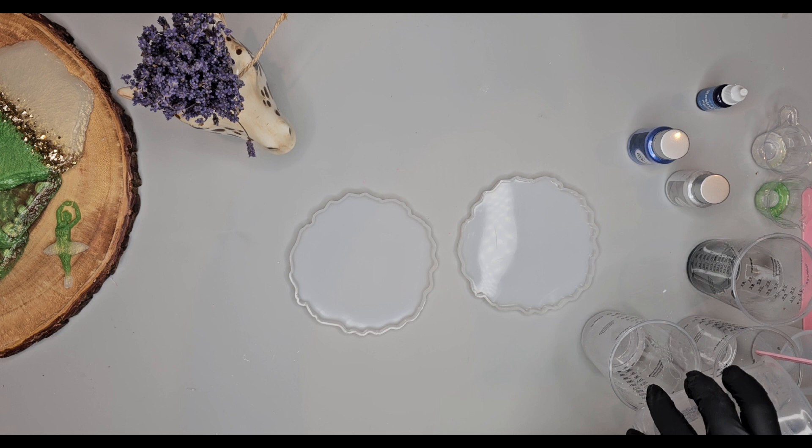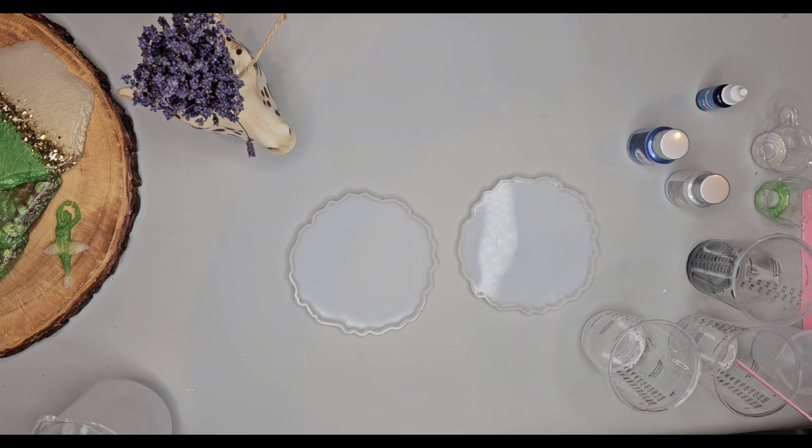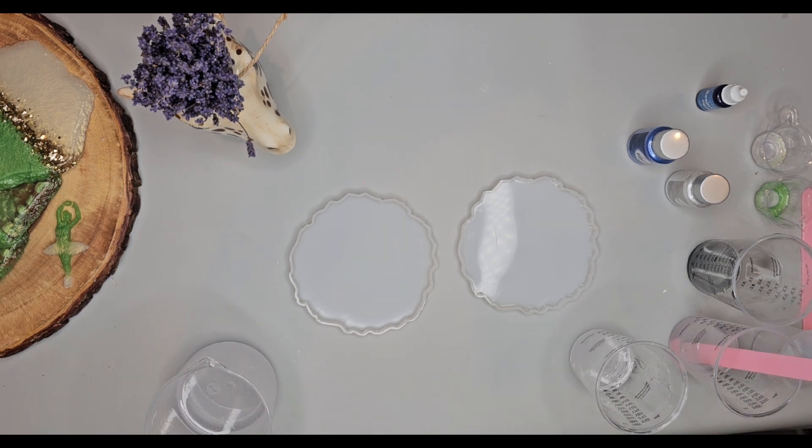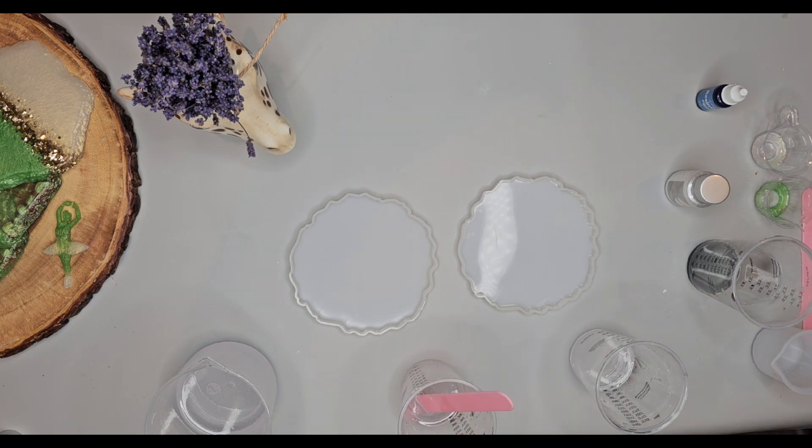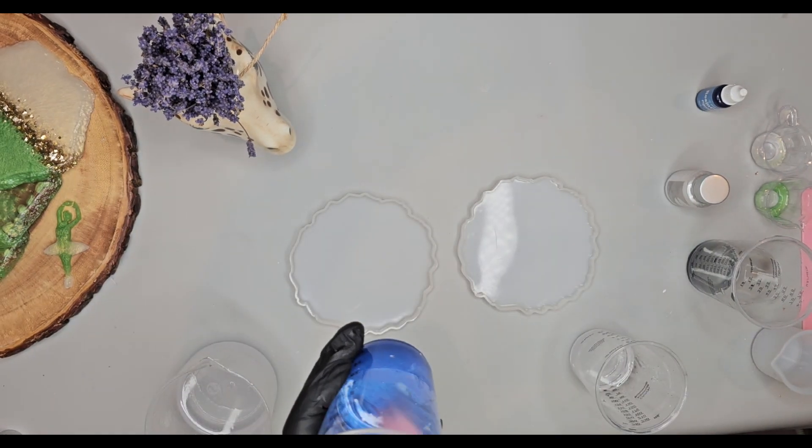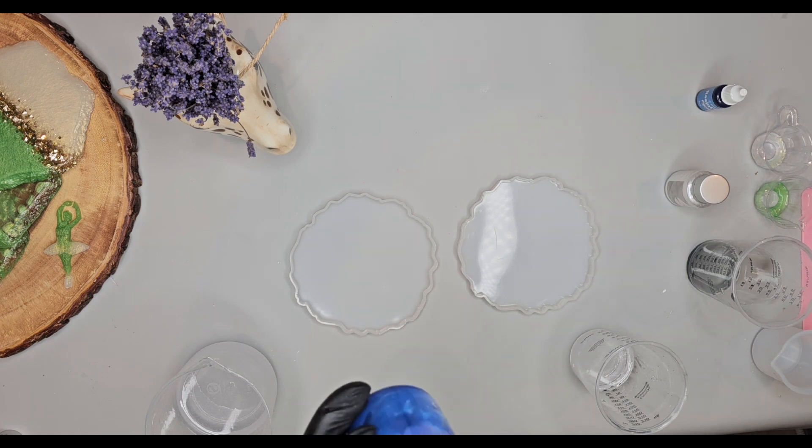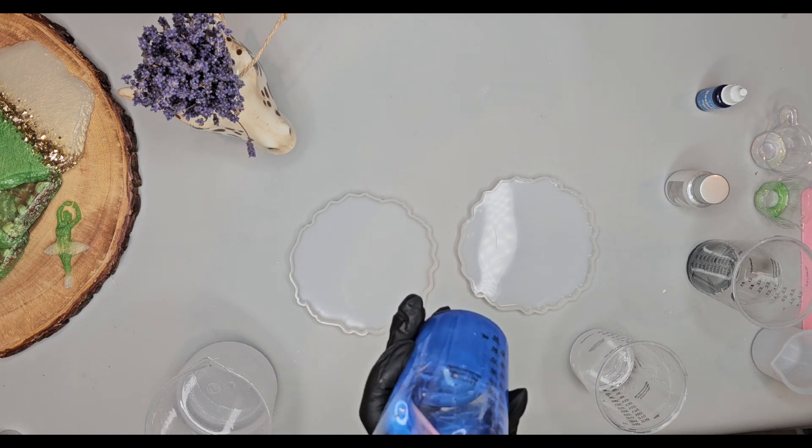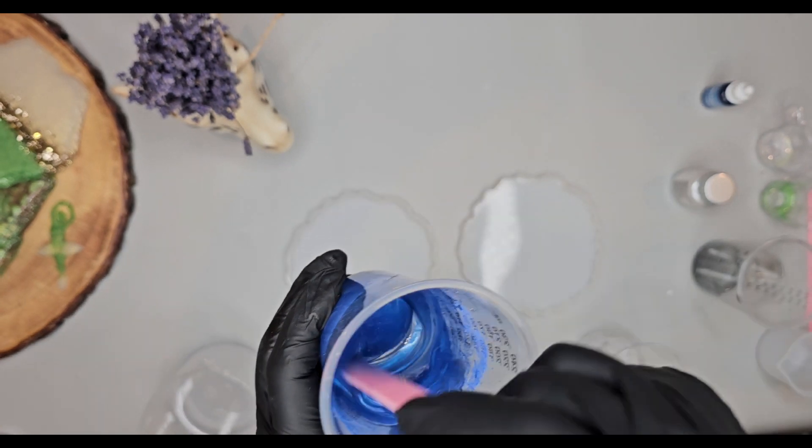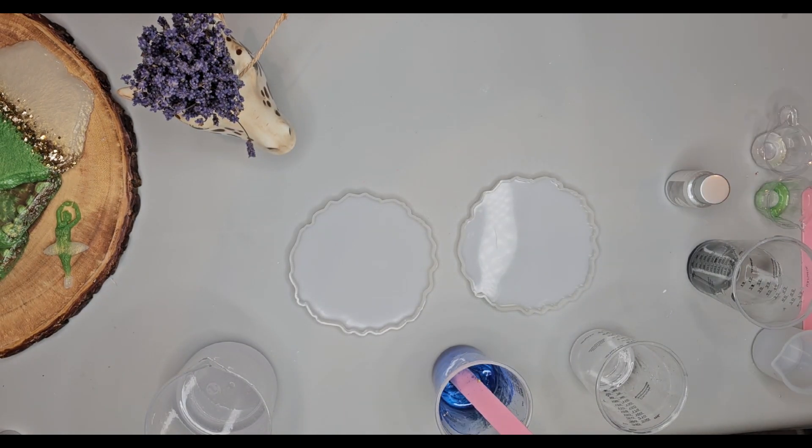For the first color, I'm going to use a mica powder which will be a beautiful shimmery blue color. With mica powder, make sure you mix it really well so all powder is mixed with the resin. Make sure you go over the sides as well. So this mica powder is really beautiful and shimmery colors.